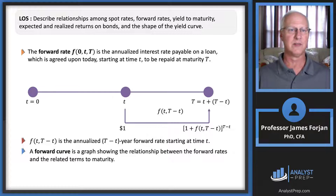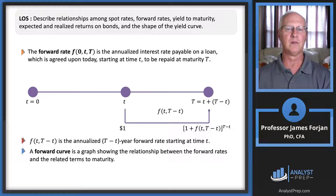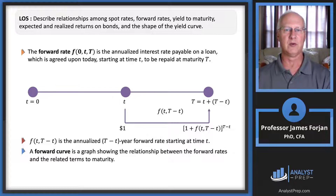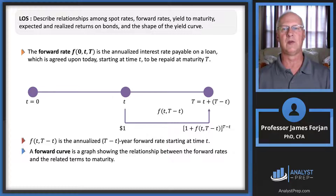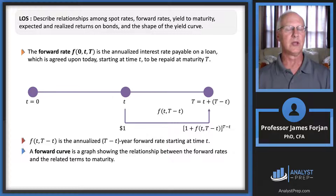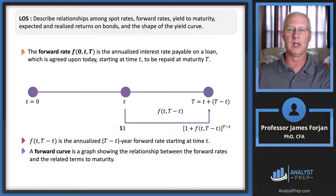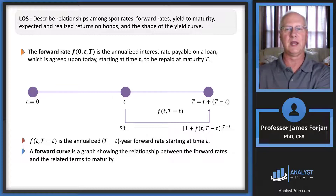That spot rate reflects the borrowing and lending rate for a loan given today's conditions. But there are lots of institutions — and individuals — who might be interested in borrowing money at some time in the future. So we need a forward rate of interest: the interest rate payable on a loan agreed upon today, starting at some future time t, and repaid at maturity date T. We can lock in that rate today for a future borrowing — that's the forward rate.